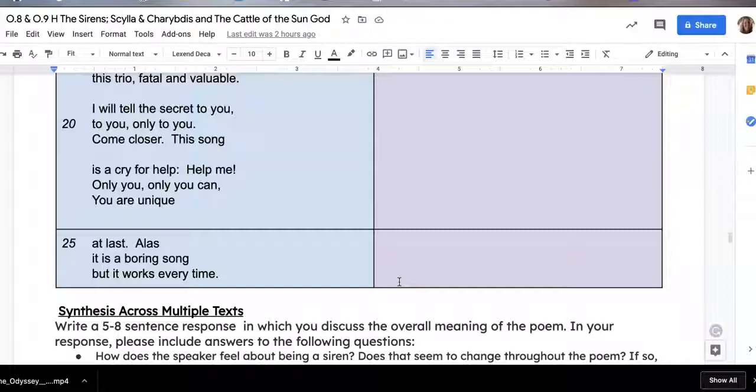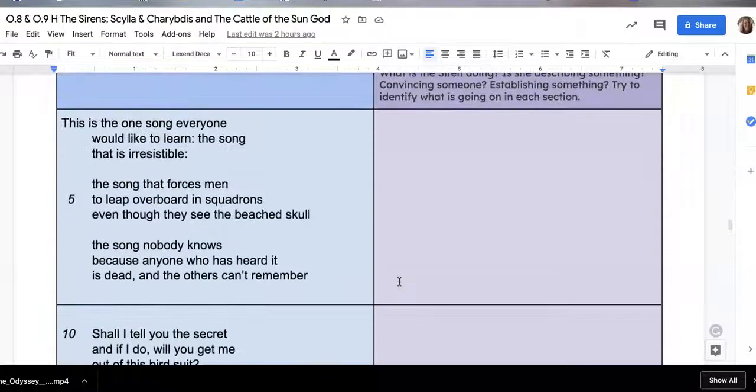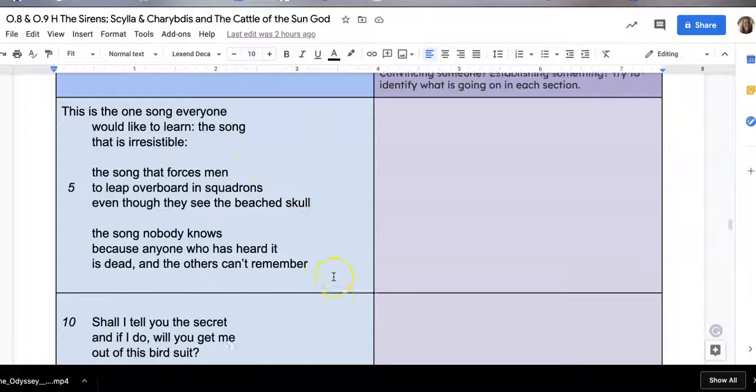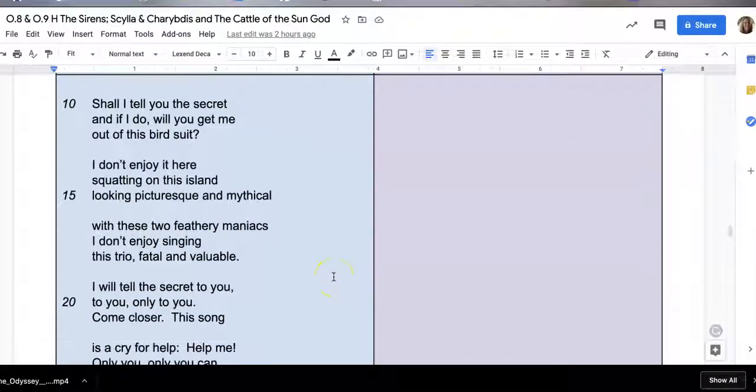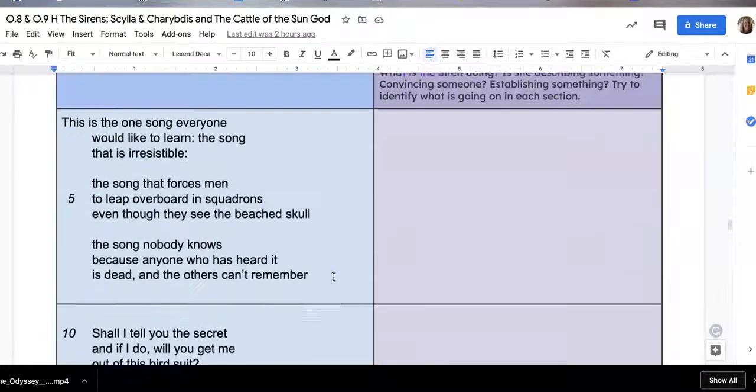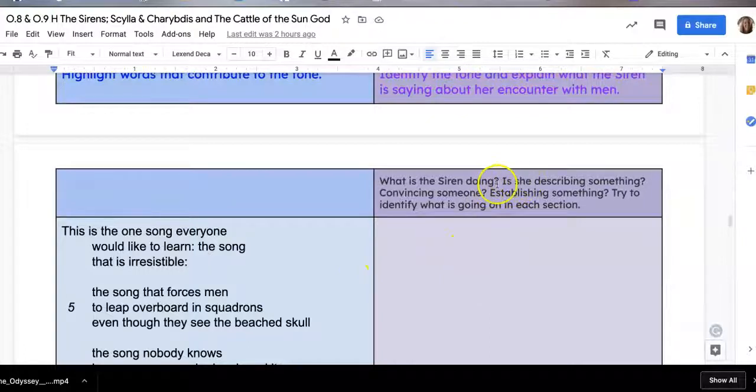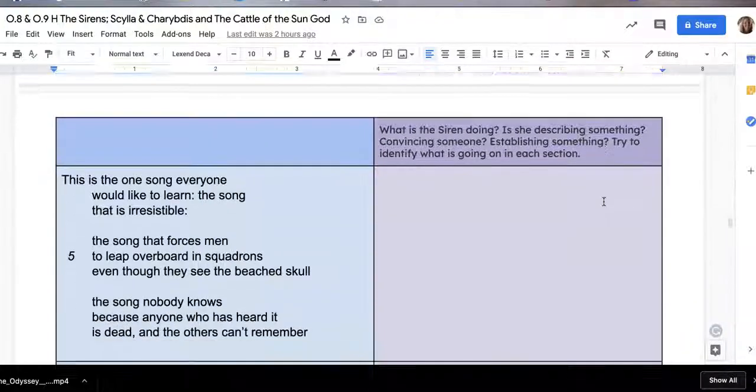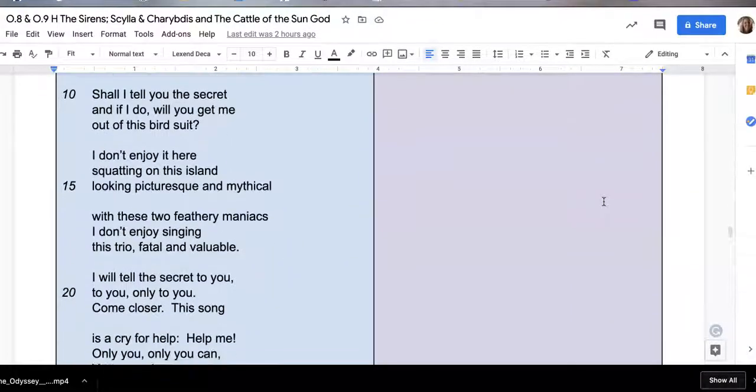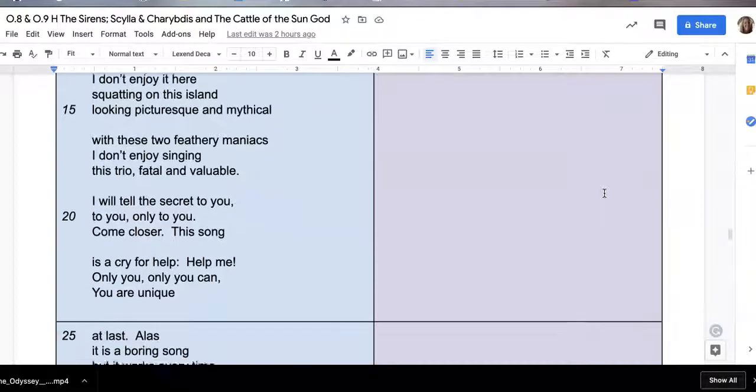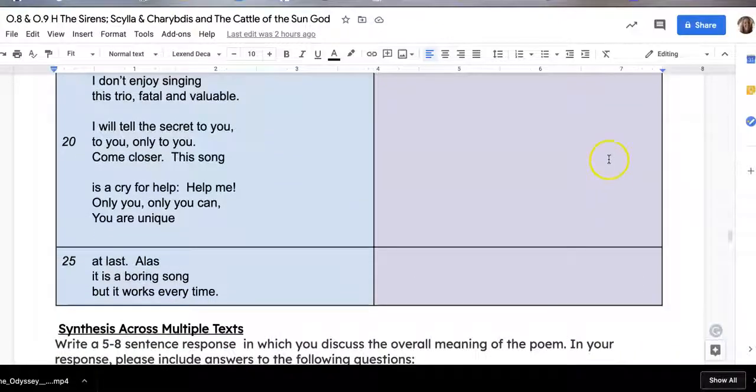Really be thinking about, in this first part, what is she trying to do in this first section? What is she trying to establish and help you to see? Here, what is she trying to do? Go back to these questions where it says, is she describing something? Is she doing something? Is she convincing someone? Is she establishing something for the listener? Really try to identify what's happening in each section. And you might want to reread it a couple of times and listen to me read it a couple of times. That might help.